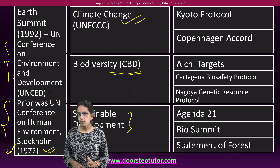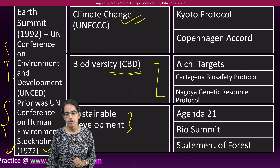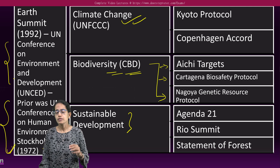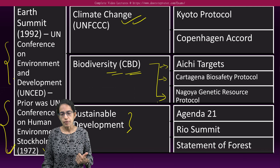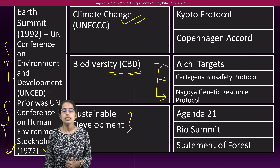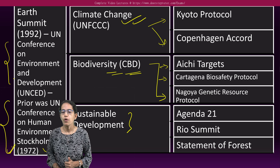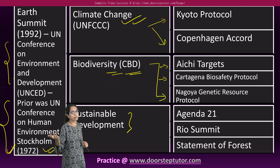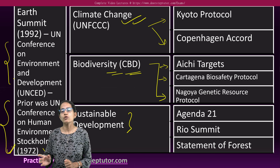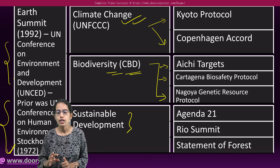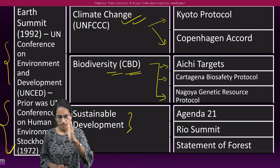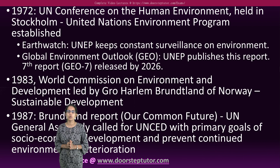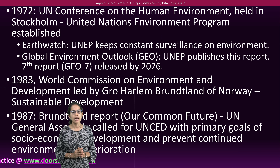Under sustainable development, there are three important aspects: Agenda 21, Rio Summit, and Statement of Forest. Under biodiversity, three important protocols: the Nagoya Protocol, the Nagoya Genetic Resource Protocol, the Cartagena Biosafety Protocol, and the Aichi Targets. Under climate change: the Kyoto Protocol and the Copenhagen Accord. We would also talk about some major international conventions, as well as the Montreal Protocol and Paris Agreement separately.